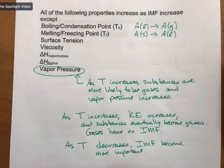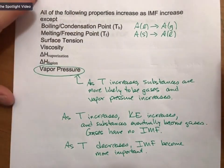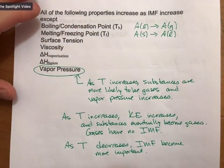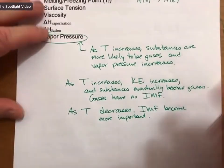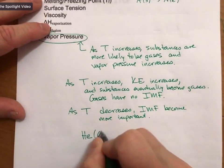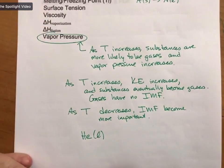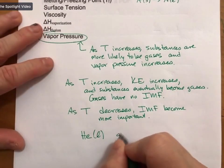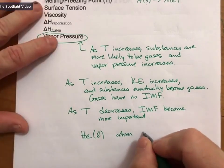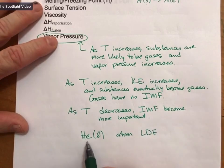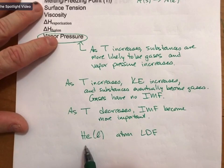There is one notable exception — does anybody know the one substance they have not been able to turn into a solid? It's actually helium. As far as we know, they've only been able to get helium to a liquid. Helium is a non-polar atom with only London dispersion forces, and it has so little molar mass that the intermolecular forces are not strong enough to make it into a solid.